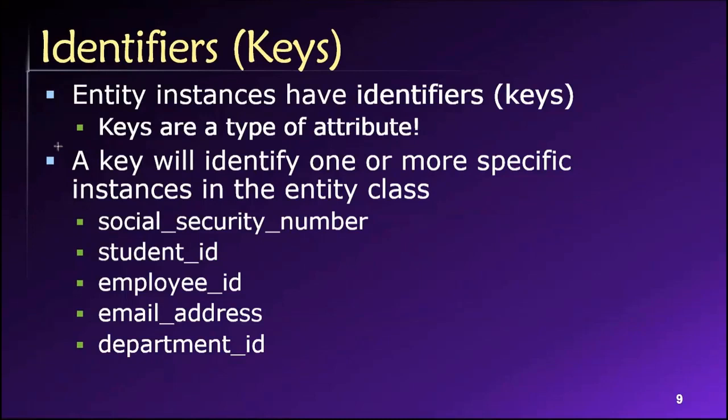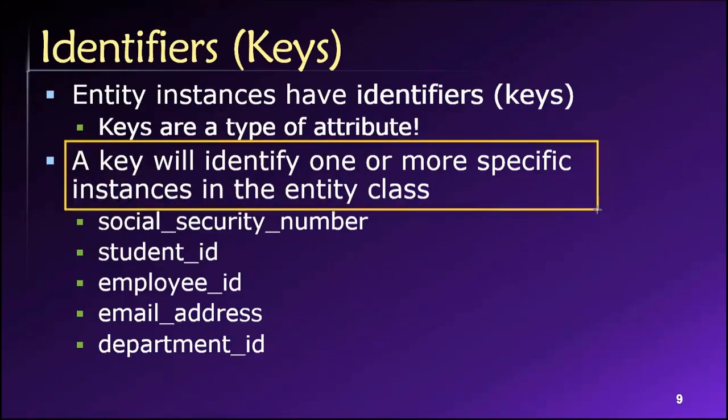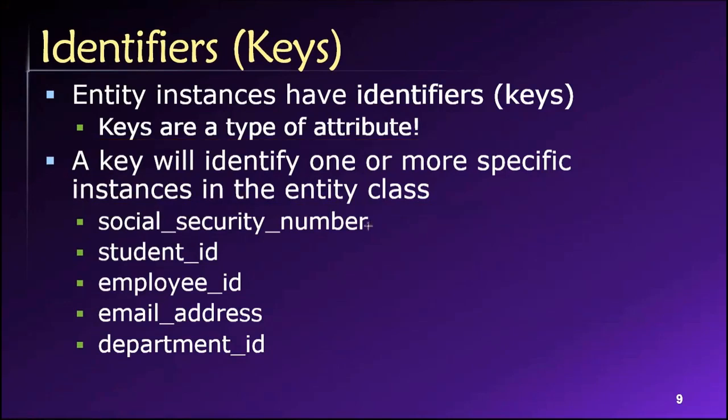But in the parlance of entity relationship modeling, we can say that a key will identify one or more specific instances in the entity class. So value of the key attribute will identify one or more rows of data or instances of the entity. Same thing. Some examples you might use: if we're like the United States federal government and we're keeping track of our citizens or people that are working in the country, we may use social security number.